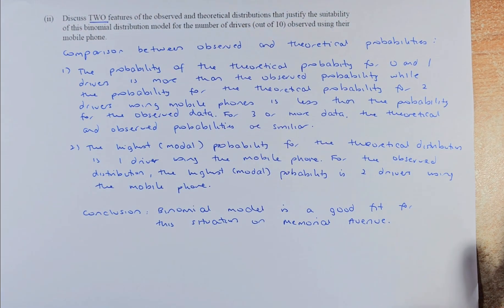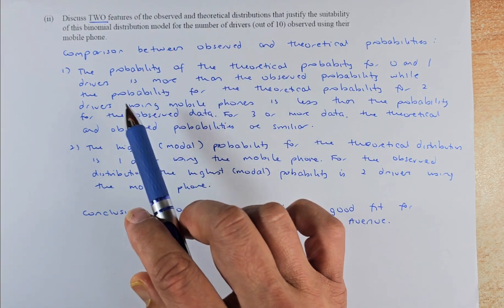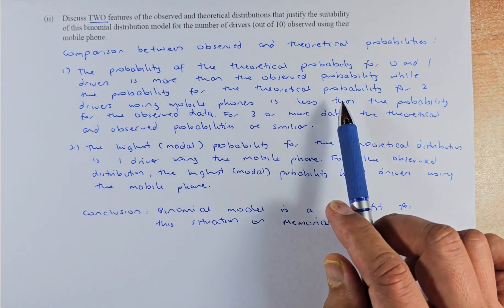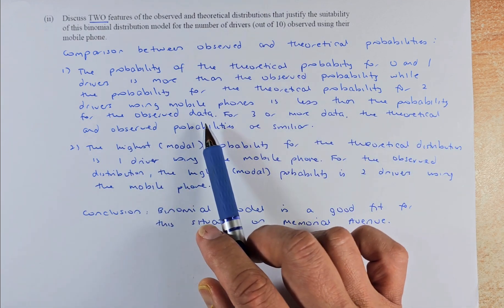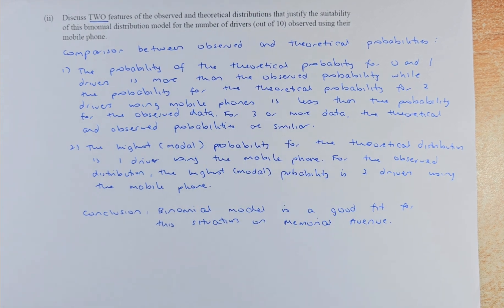So we're going to read the question. Discuss two features of the observed and theoretical probability that justify the suitability of the binomial distribution model for the number of drivers observed using their mobile phone. So we are going to compare between the observed and theoretical. So with this question, I'm going to show you the graph. The probability of the theoretical probability for 0 and 1 drivers is more than the observed while the probability for theoretical probability for 2 drivers using mobile phone is less than the probability for the observed data. For 3 or more data, the theoretical probability of the observed probabilities are similar. So I'm going to bring back the graph.